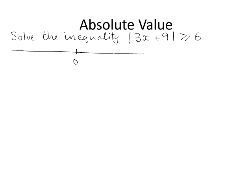Here's 0, 6, and minus 6 on the number line. We have that the distance between 3x plus 9 and 0 must be bigger than or equal to 6, so that means 3x plus 9 could be any number from 6 onwards.